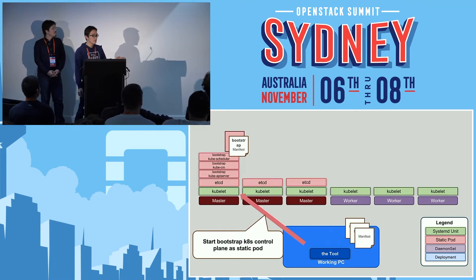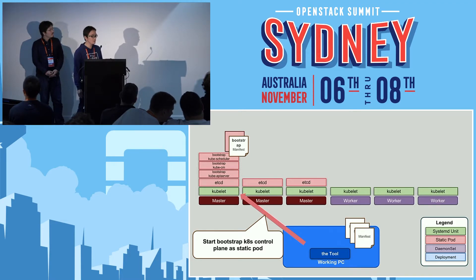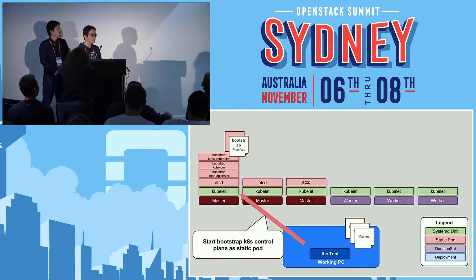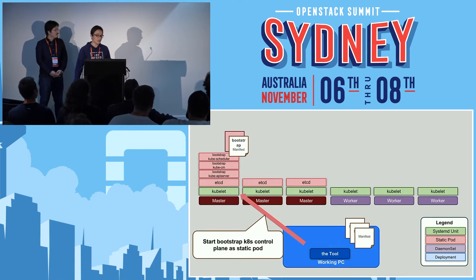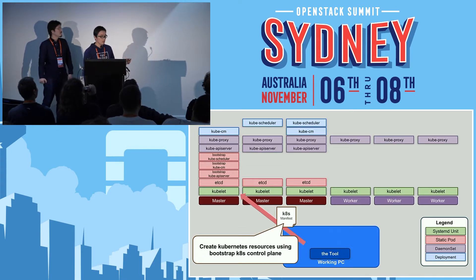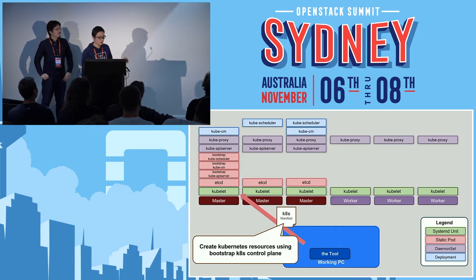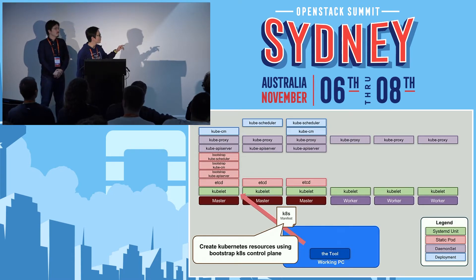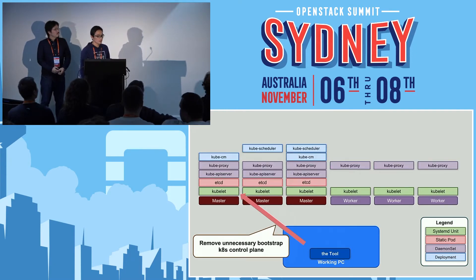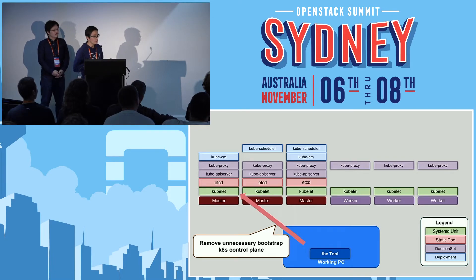If kubelet and etcd are working, we can start a temporary bootstrap Kubernetes control plane. This bootstrap Kubernetes control plane is responsible for starting the complete Kubernetes. So if the bootstrap Kubernetes control plane is working, we can create the complete Kubernetes as Kubernetes resources. These complete Kubernetes manifests are created by the temporary bootstrap Kubernetes. Then the unnecessary bootstrap Kubernetes control plane is removed when the complete Kubernetes cluster is working.